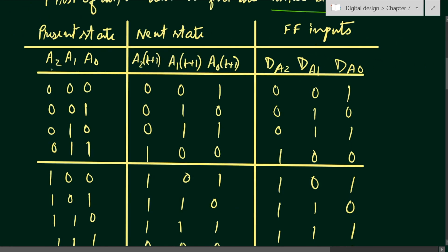We have inputs A2, A1, and A0. The next state columns are A2(t+1), A1(t+1), and A0(t+1). For present state 0, 0, 0 the next state will be 1; for present state 1 the next state will be 2; for present state 2 the next state will be 3. In this way we fill in the complete state table.